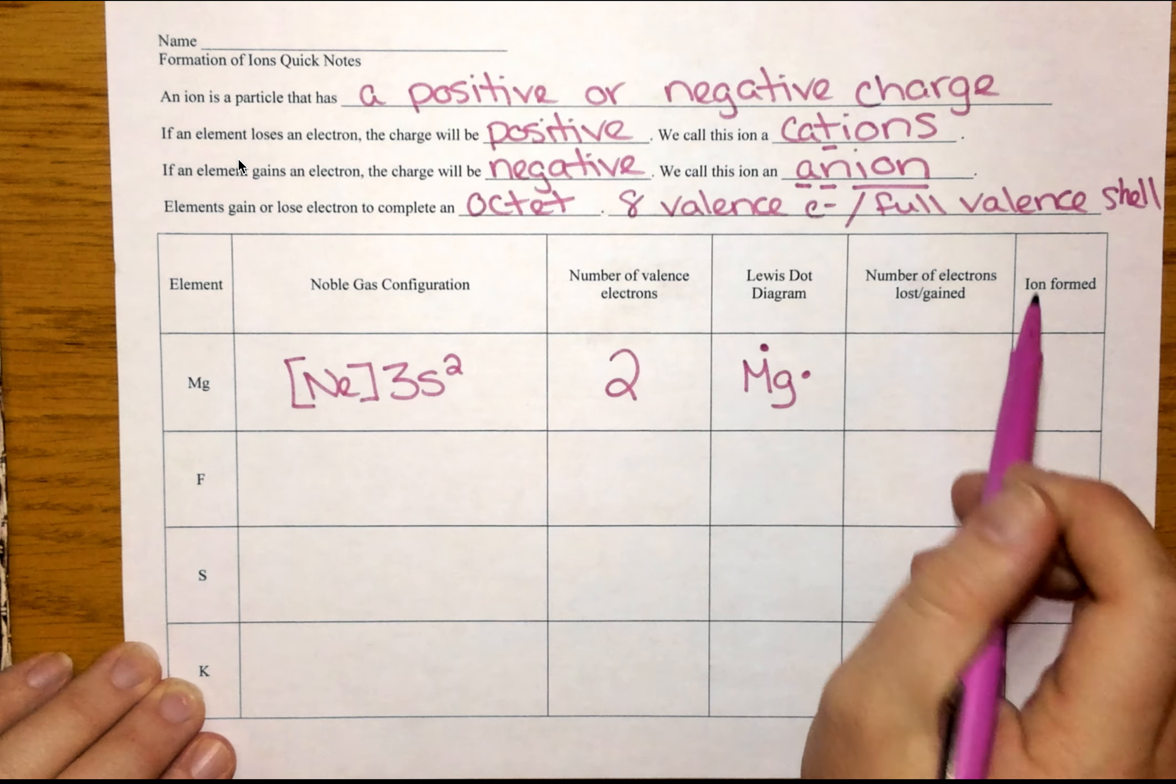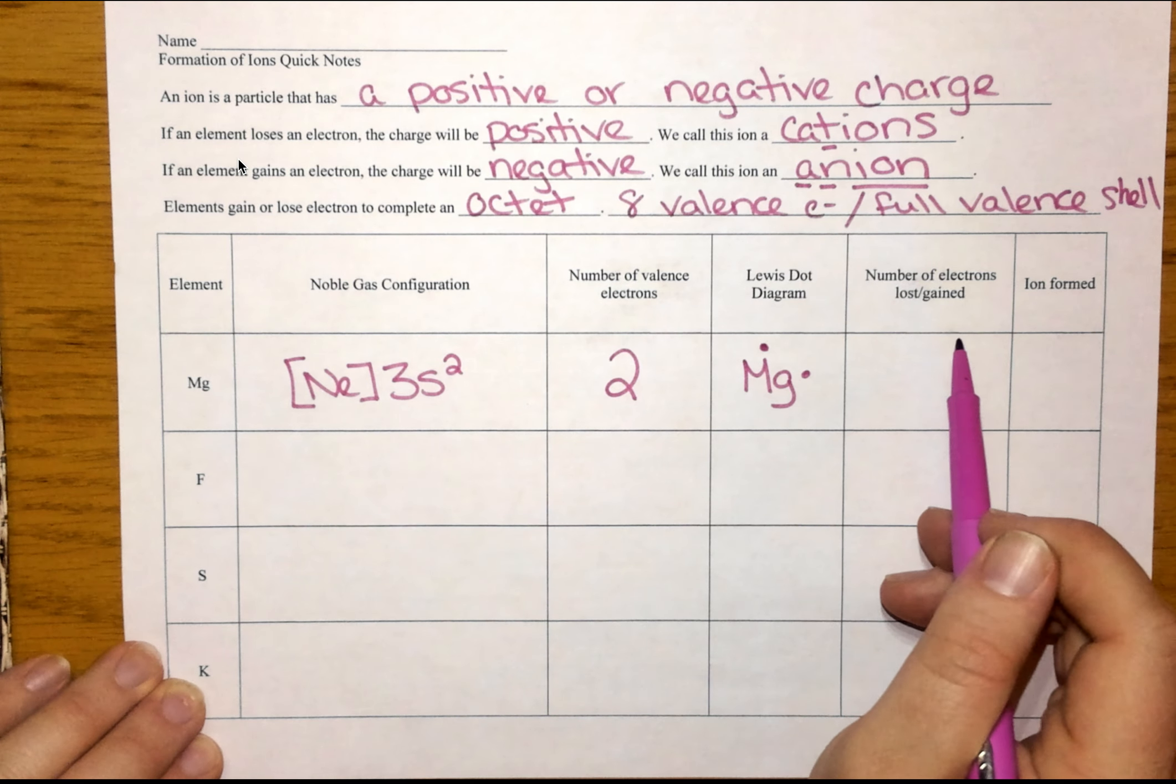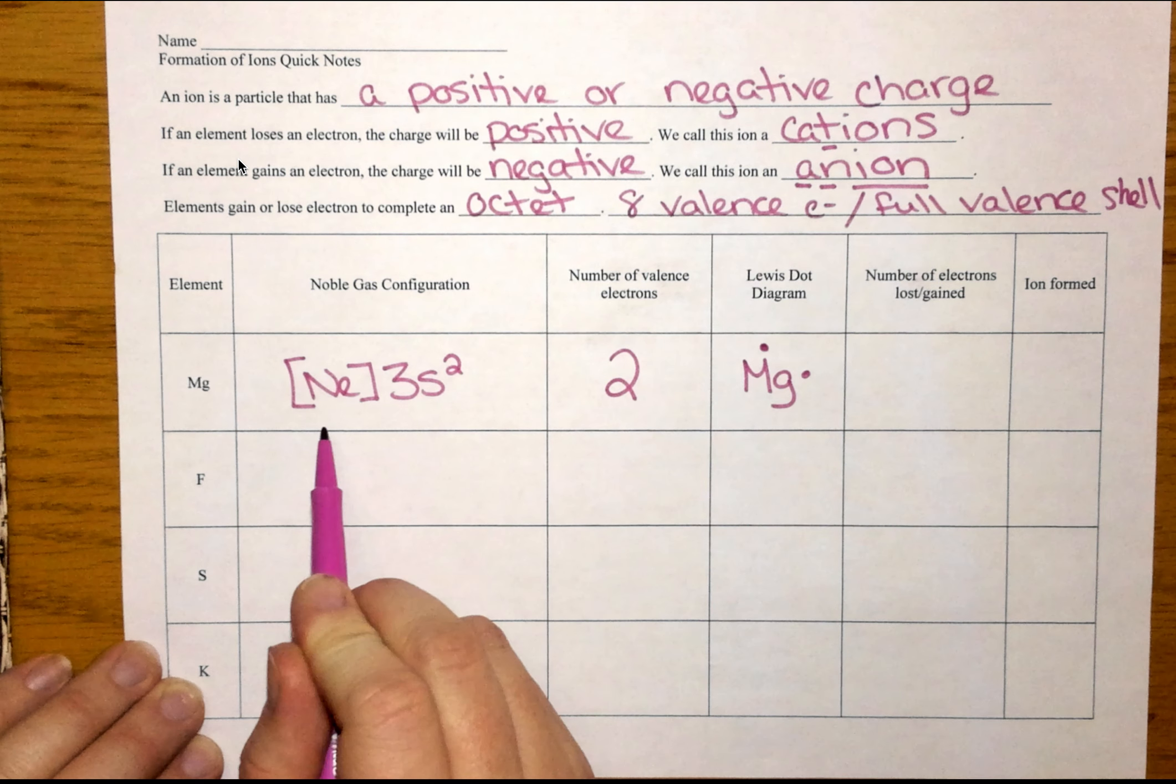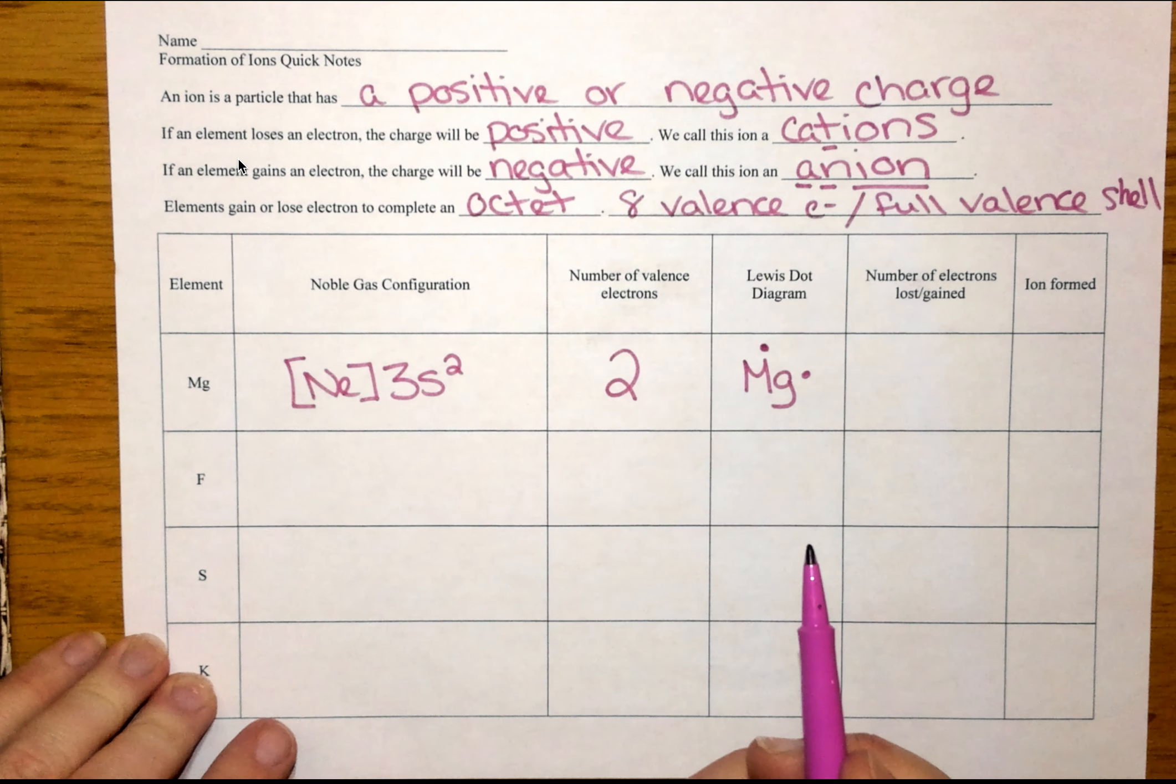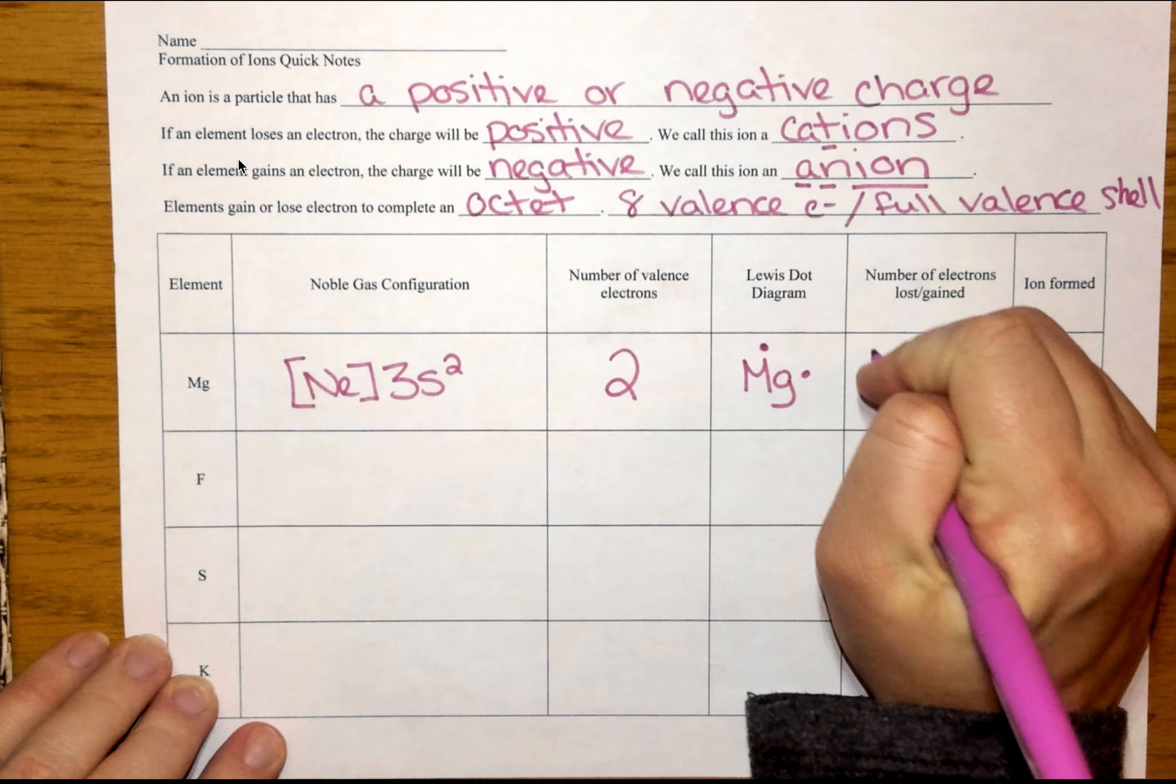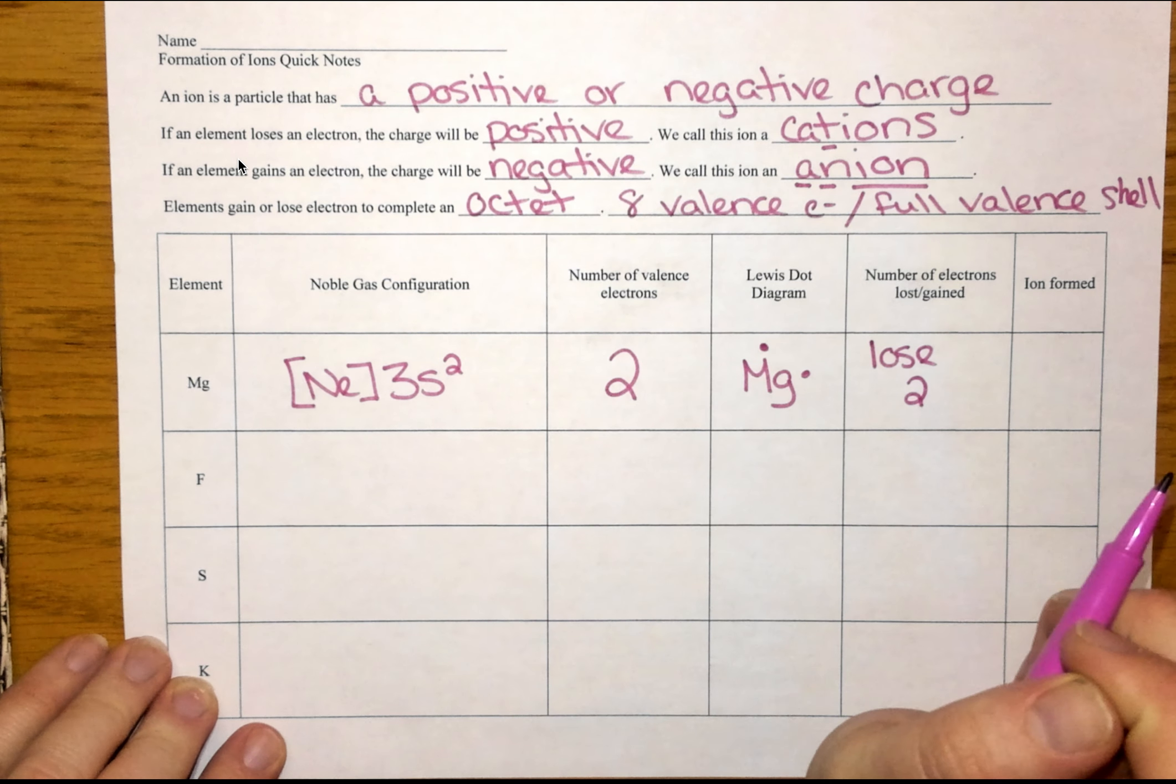So my next thing is, how do I get to be a noble gas? What is going to be easier? Would it be easier for magnesium to lose two electrons to become like neon or gain six electrons to get to the eight and become like argon? So we're always going to do whatever the smaller number is. So for magnesium, we're going to lose two.